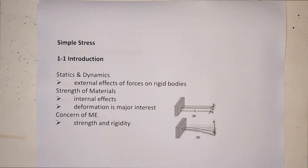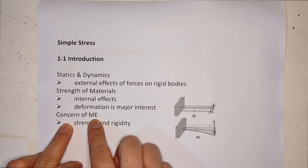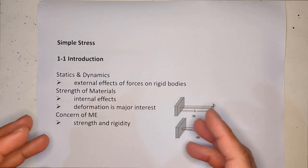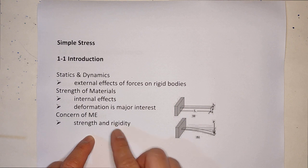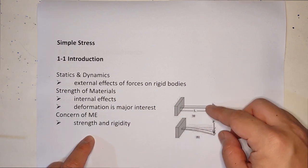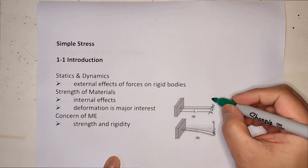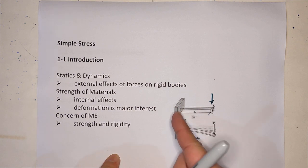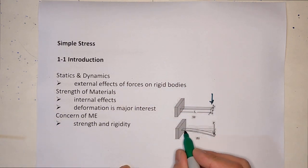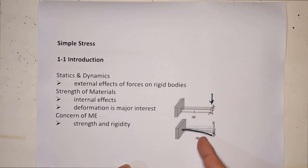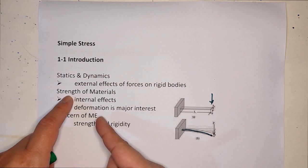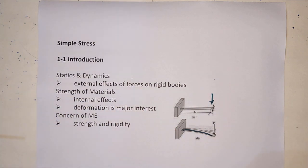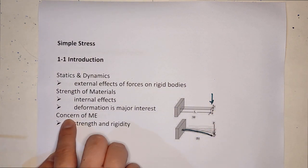The concern of mechanical engineer is not only about the strength of materials but of course the rigidity. In your mechanics, for example, if you have here a load you can compute for the reaction and that's it. You're not concerned about the bending, but in actual you have a bending and that is now in the realm of strength of materials. Later on in the higher subject you will have the machine design.